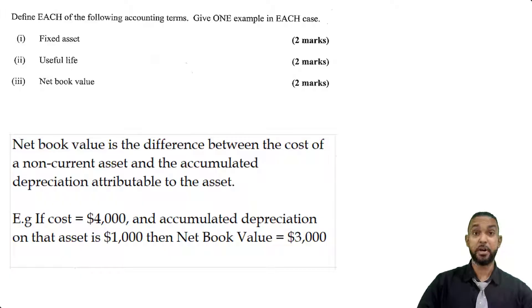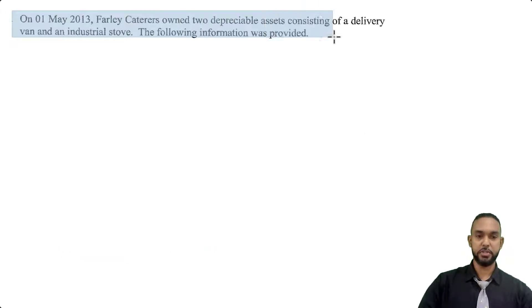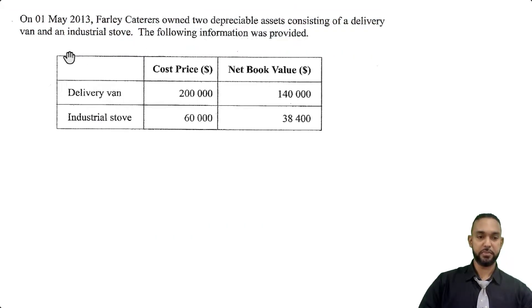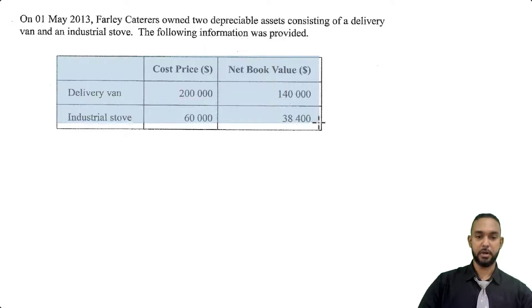Let's take a look at part B. On the 1st of May 2013, Farley Caterers owned two depreciable assets: a delivery van and an industrial stove. The following information was provided in a table. The delivery van has a cost price of $200,000 and net book value of $140,000. The industrial stove has a cost price of $60,000 and a net book value of $38,400.